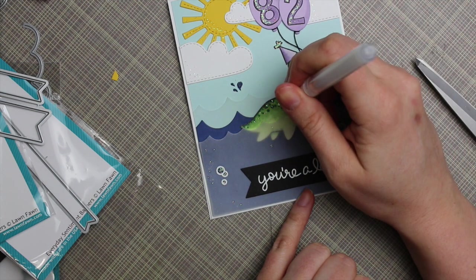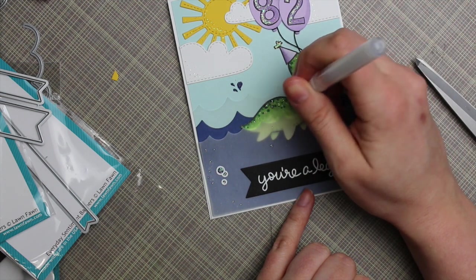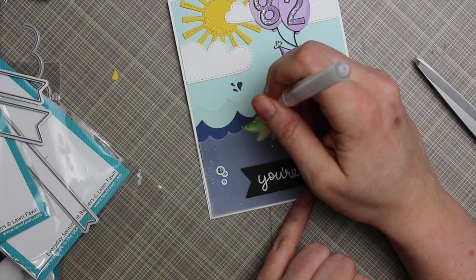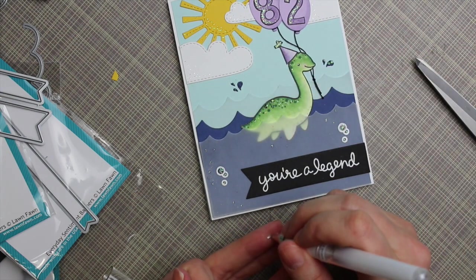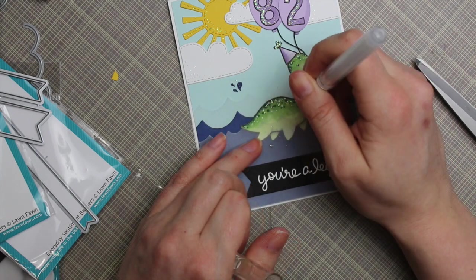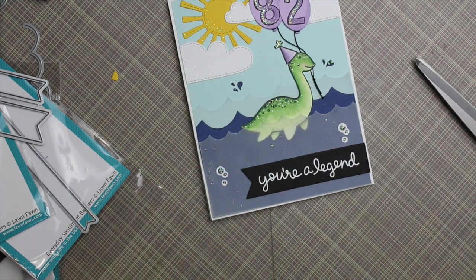And then as a final little bit of enhancement, I took my white gel pen and just added a little dot to the eye and then added a few more dots among the top of the little lock us monster just to finish it off. And that's all there was to it.